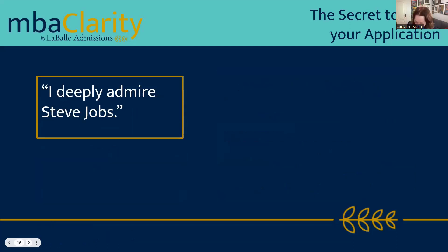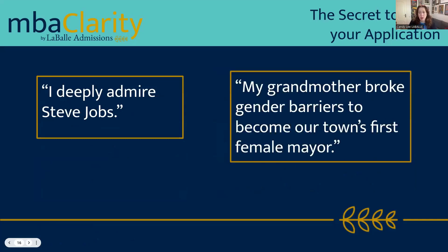I deeply admire Steve Jobs, Warren Buffett, or Nelson Mandela — these are wonderful people to admire, but it's a little generic. Not a lot of people could say 'my grandmother broke gender barriers to become our town's first female mayor,' or describe how their single mom or grandfather is their idol. If you get more personal, you share more of who you are and are being more authentic. Even the sentence itself tells the reader about the person — someone who comes from a place where people fight for their goals, don't accept the status quo. Those are examples of how to be authentic.